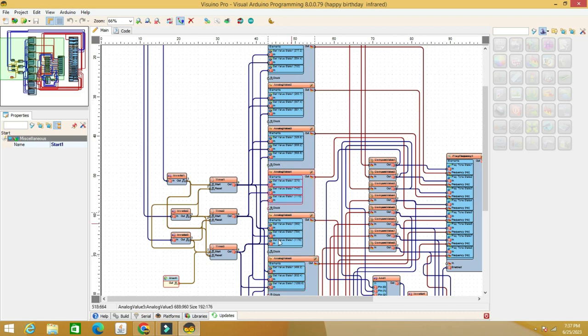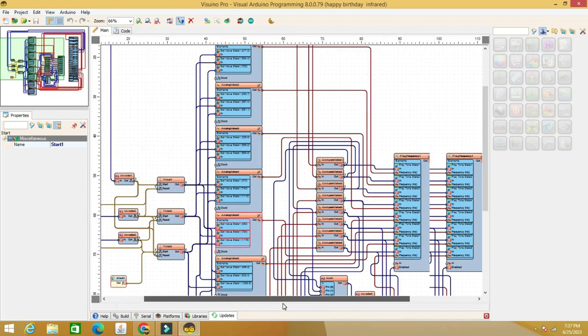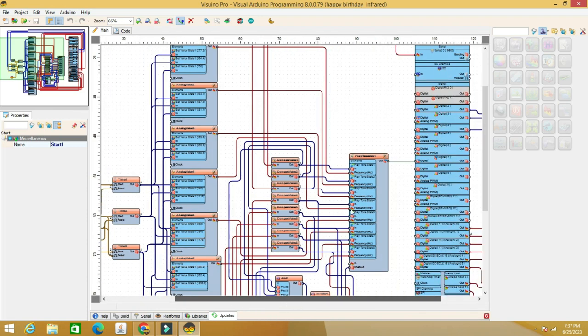The outputs of the analog value components are connected to the input of the play frequency component. This will emit the tone depending on which compare analog value output is activated.